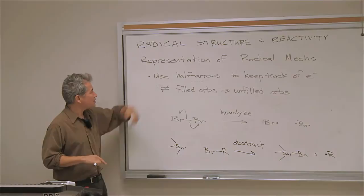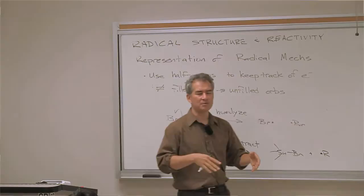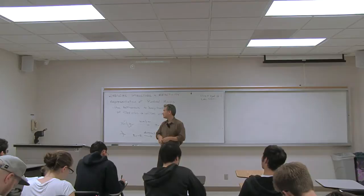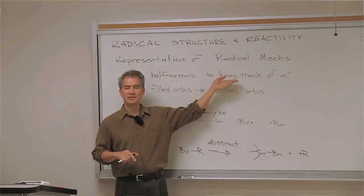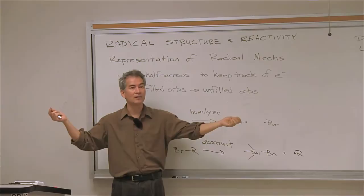Let's start off by focusing on how we represent radical mechanisms. We're going to make a shift from the very powerful arrow pushing we've been using throughout this class and throughout Chemistry 201, and switch over to what we refer to as half arrows or fish hook arrows, because they kind of resemble fish hooks. The most important thing about half arrows is we're solely using them as a way to keep track of electrons.